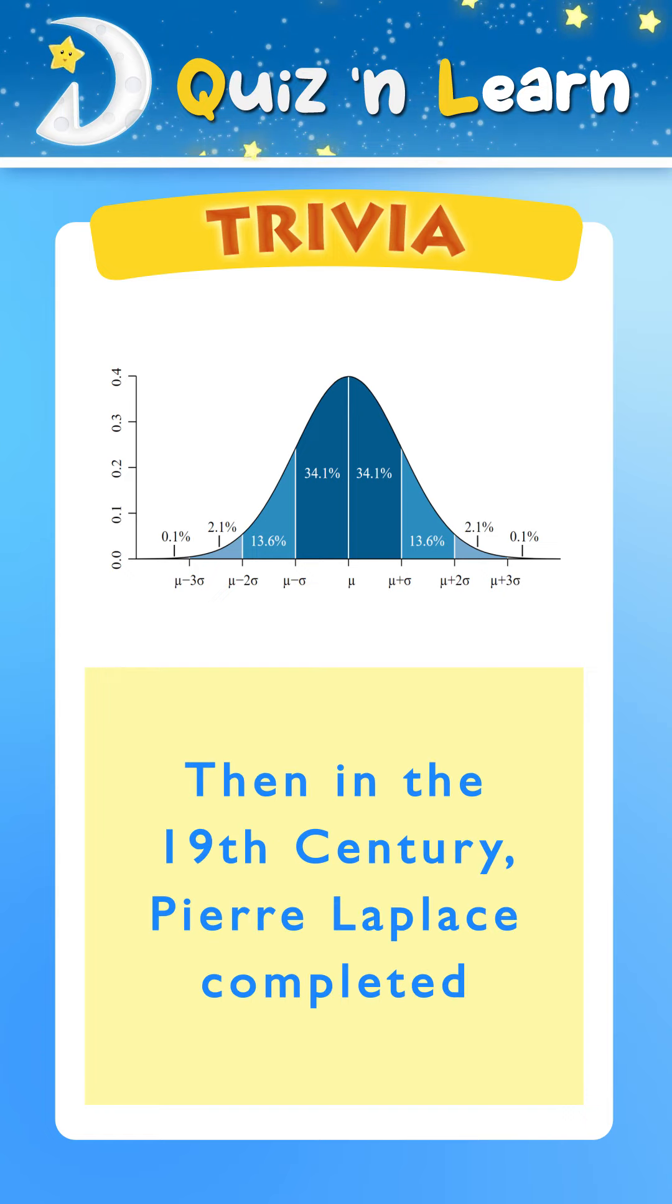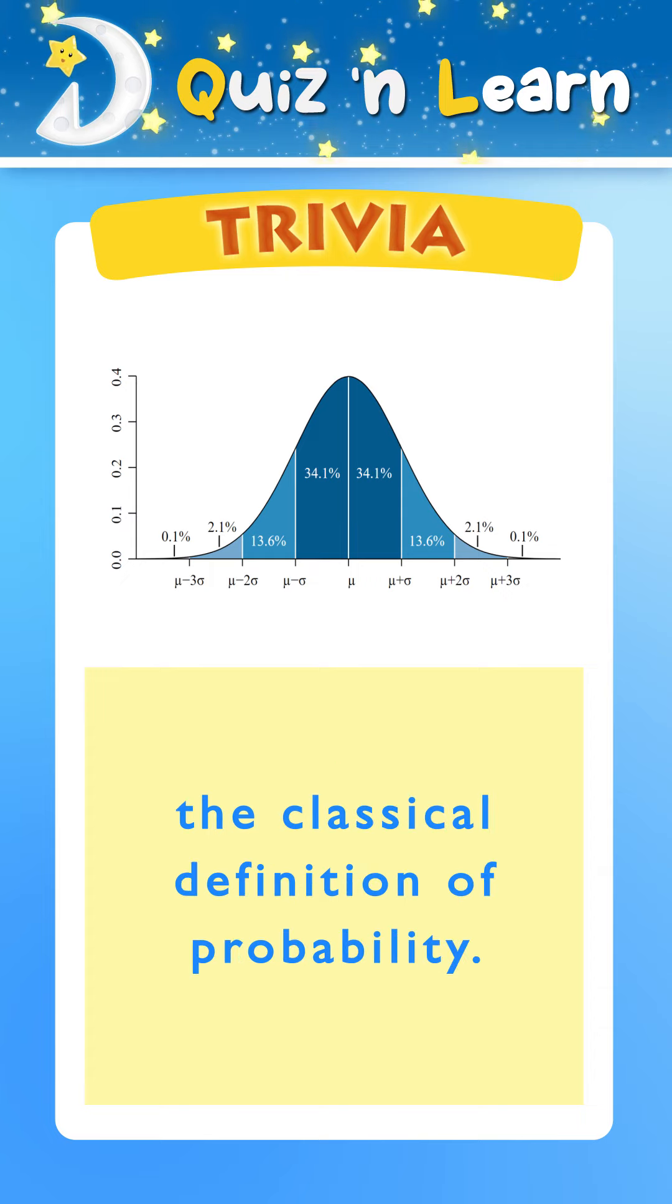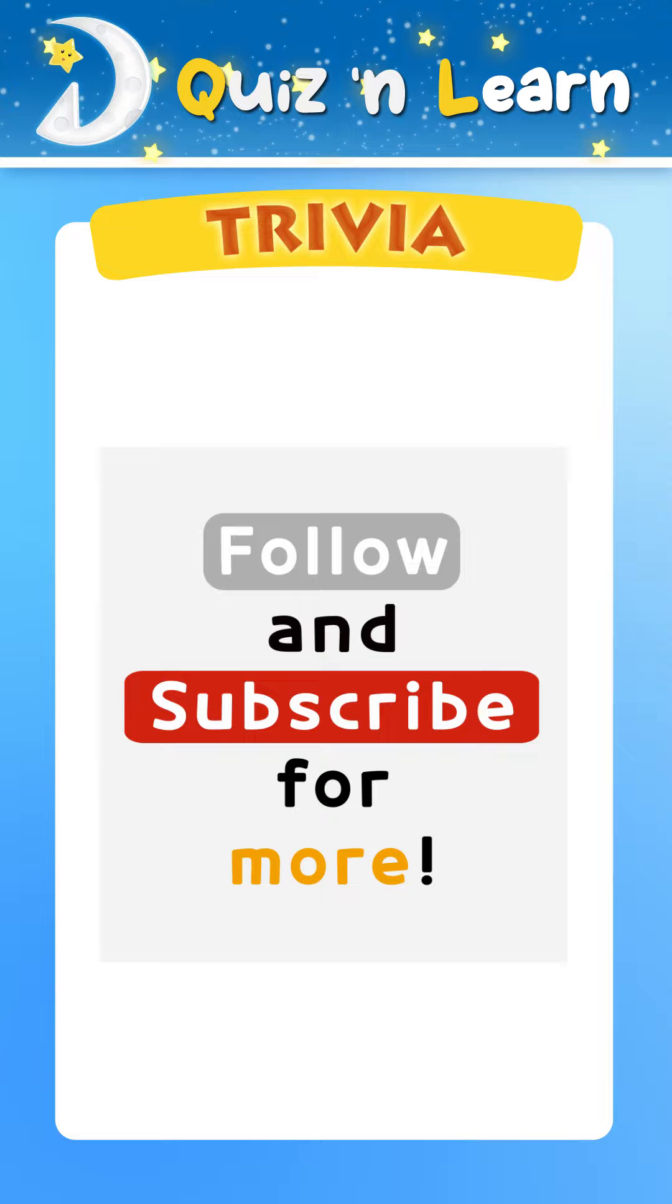Then, in the 19th century, Pierre Laplace completed the classical definition of probability. Follow and subscribe for more!